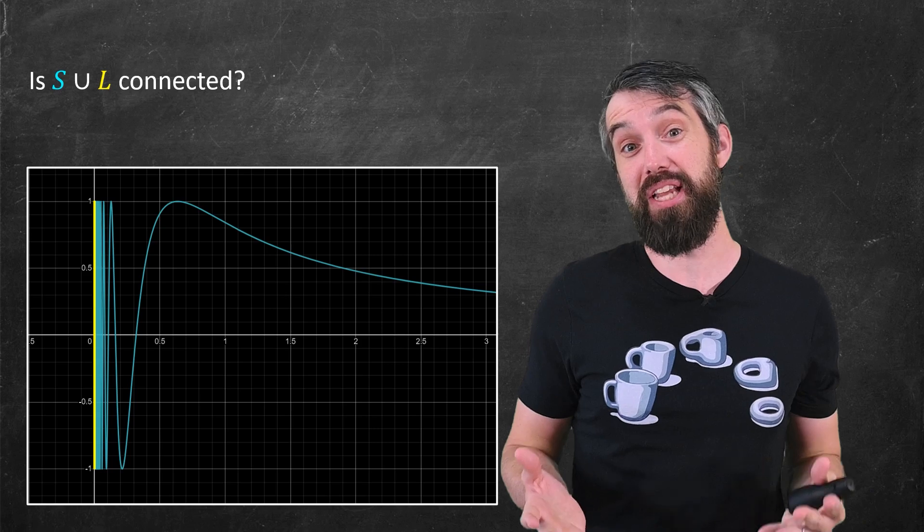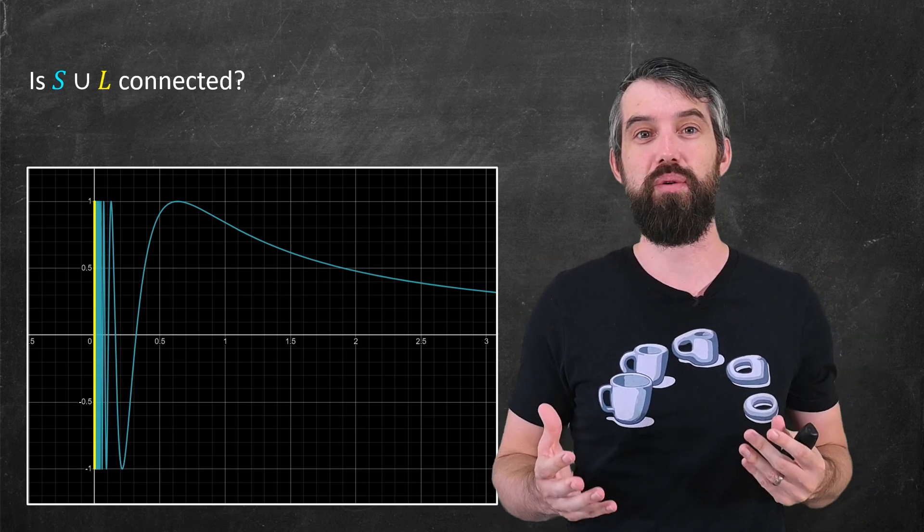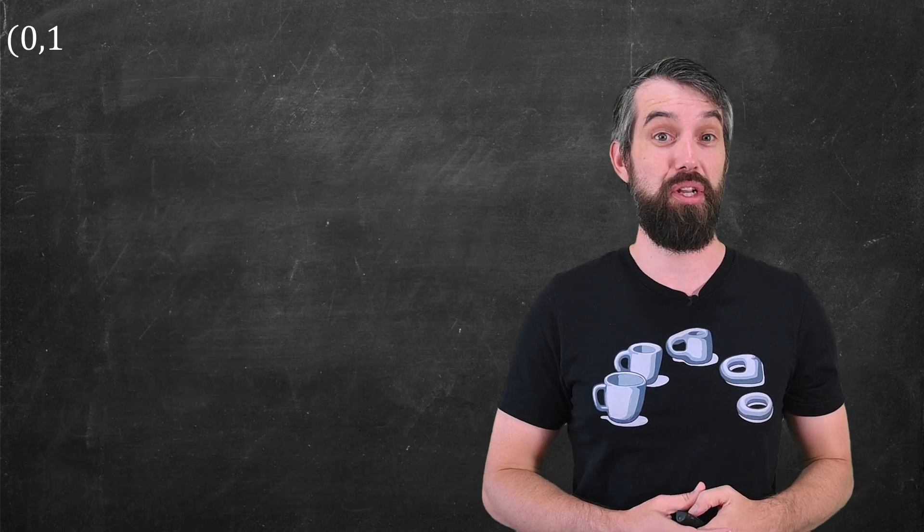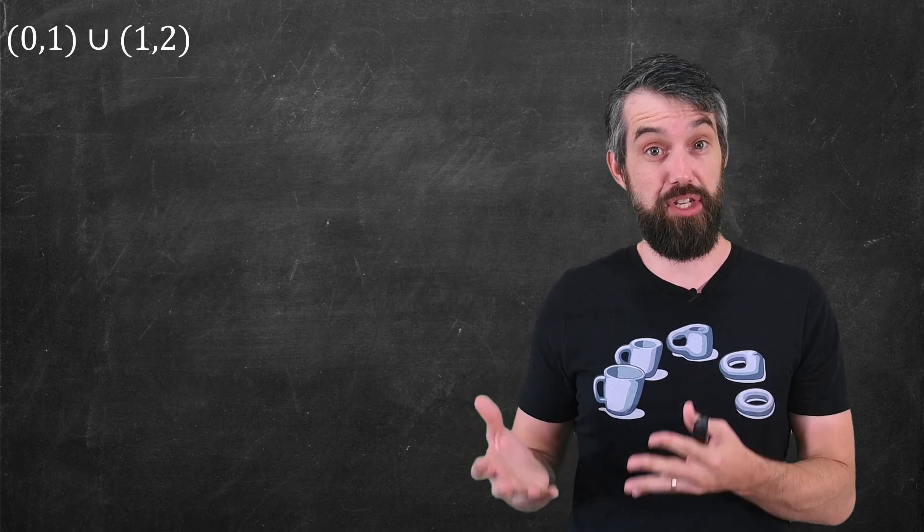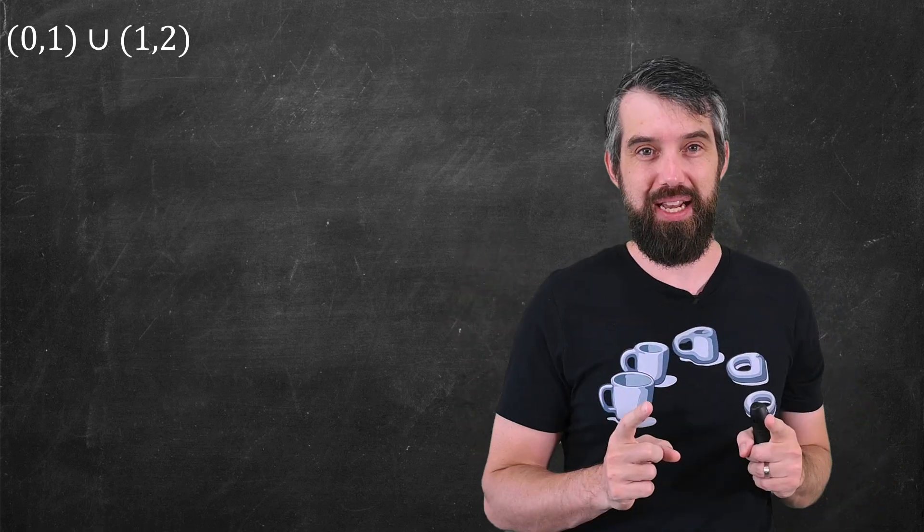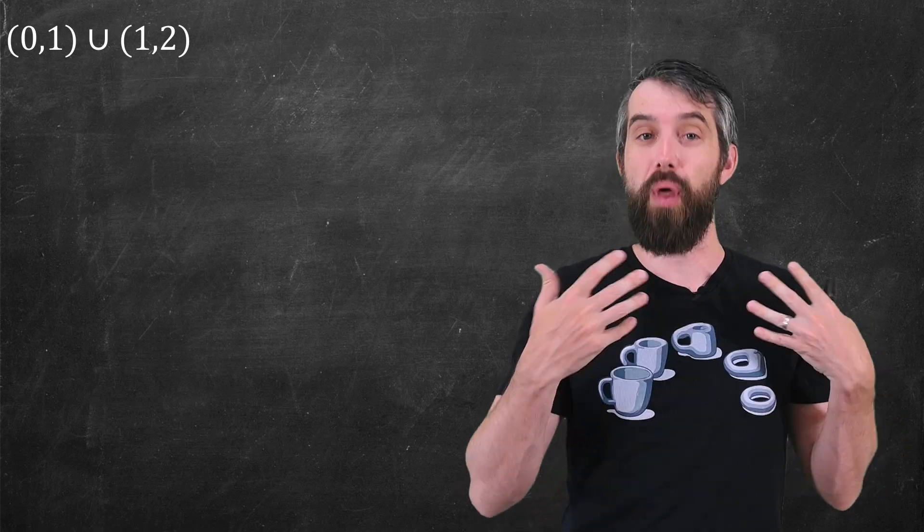So to really answer it, I have to tell you precisely what do I mean by connected. And to do that, I want to start with a simpler example. Let's just consider, for instance, the interval (0,1) union the interval (1,2). The round brackets here denote that I am not including the endpoints. These are so-called open intervals.